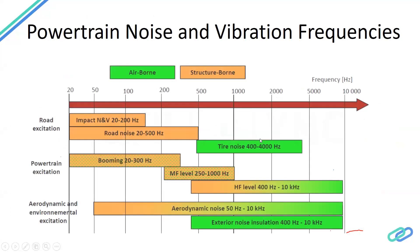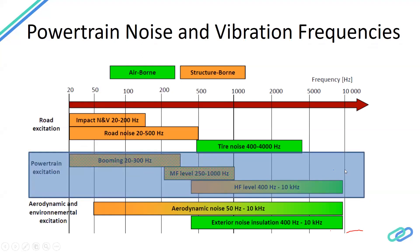Powertrain noise and vibration frequencies typically range up to 1000 Hz. In the frequency chart, the orange/red region represents structure-borne vibration you can feel only. The green region represents noise you can hear, and in between is booming that you can both feel and hear. Booming noise is around 20 to 300 Hz, mid-frequency is around 250 to 1000 Hz, and high frequency goes from 400 Hz up to 10 kHz.